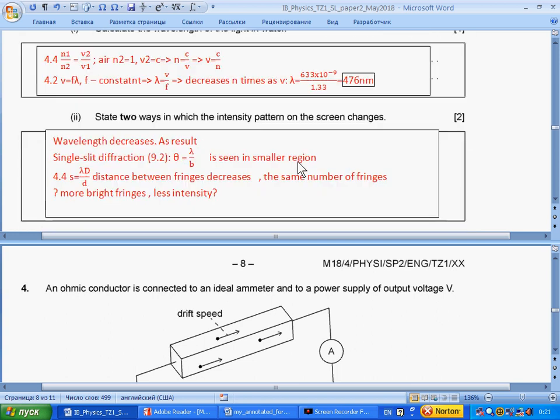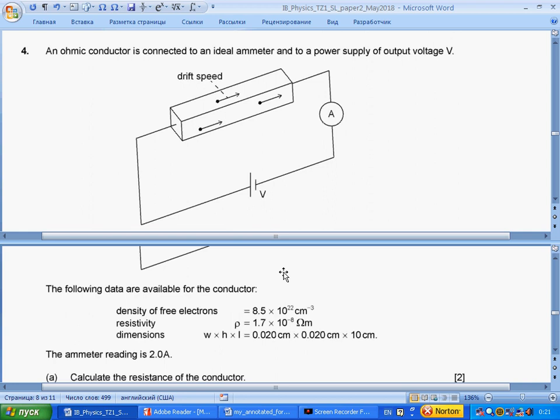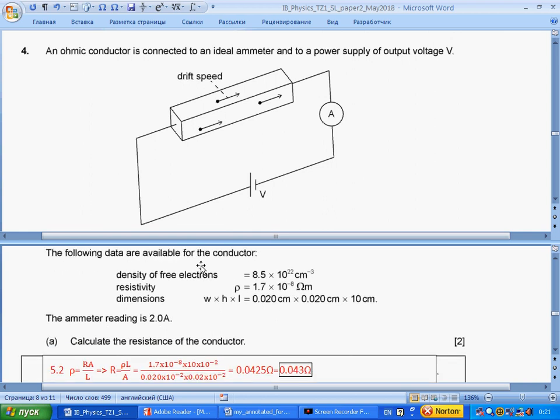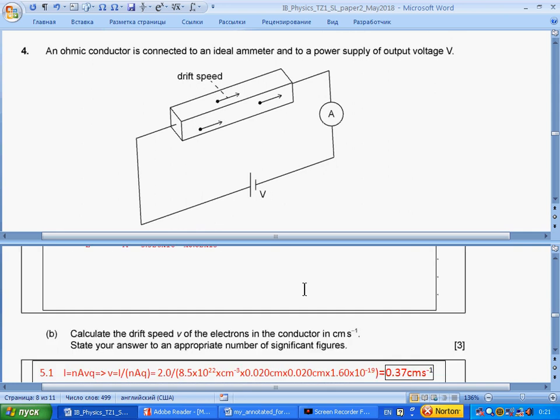Question 4. An ohmic conductor is connected to an ideal ammeter and power supply of output voltage V. The following data are available for the conductor: density of free electrons, resistivity, and dimensions. Ammeter reading is 2 amperes. Calculate the resistance of the conductor. From section 5.2, we have formula for resistivity, which can be written for resistance of a piece of wire. All information we have. Resistivity is with two significant figures. This is why answer is also with two significant figures.